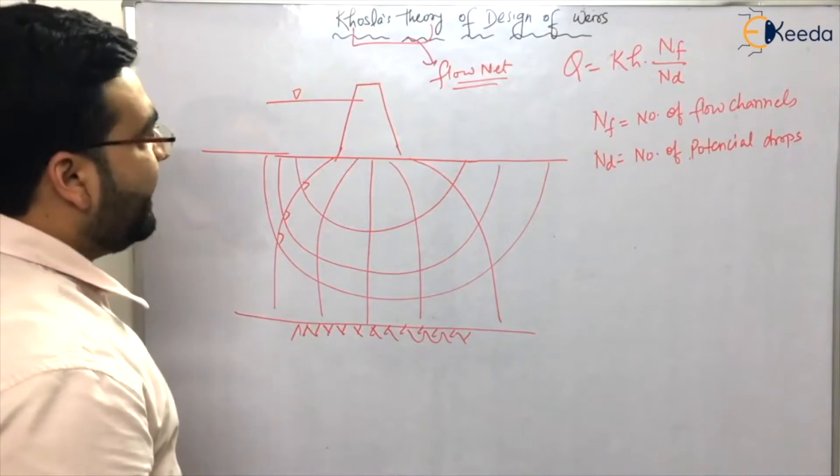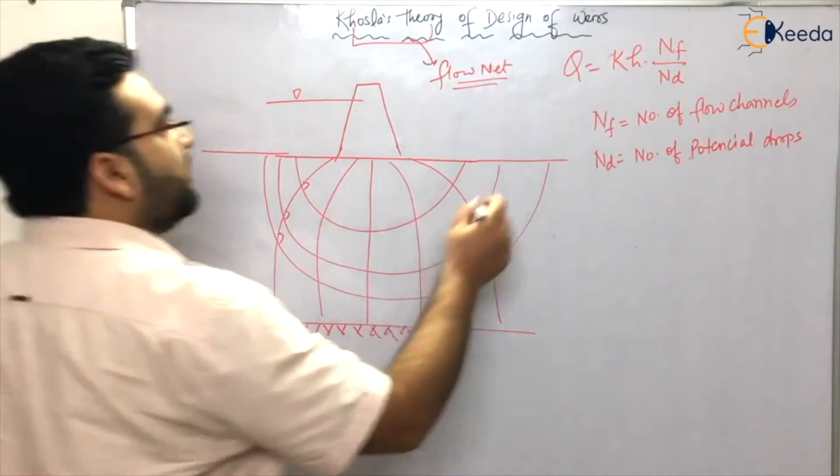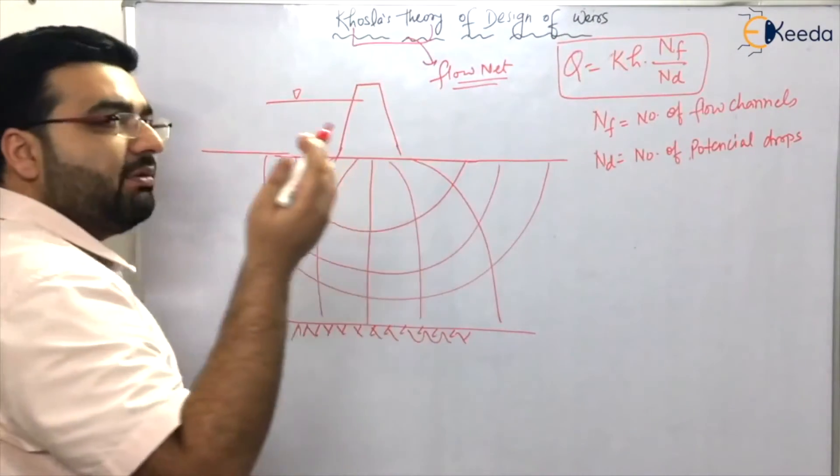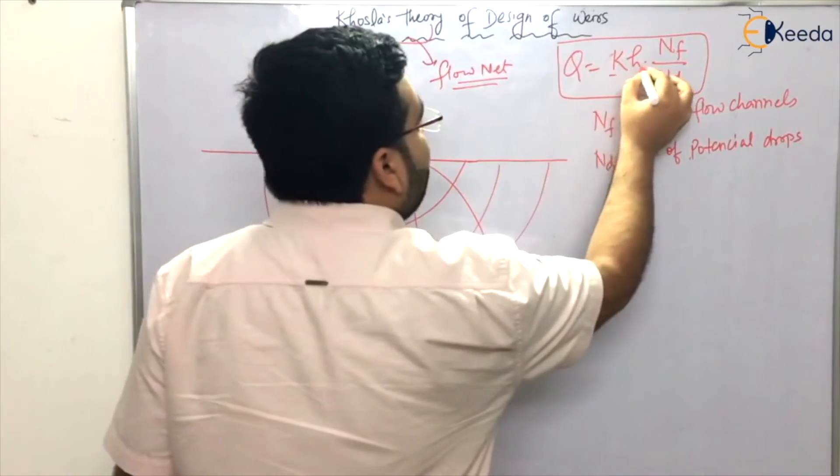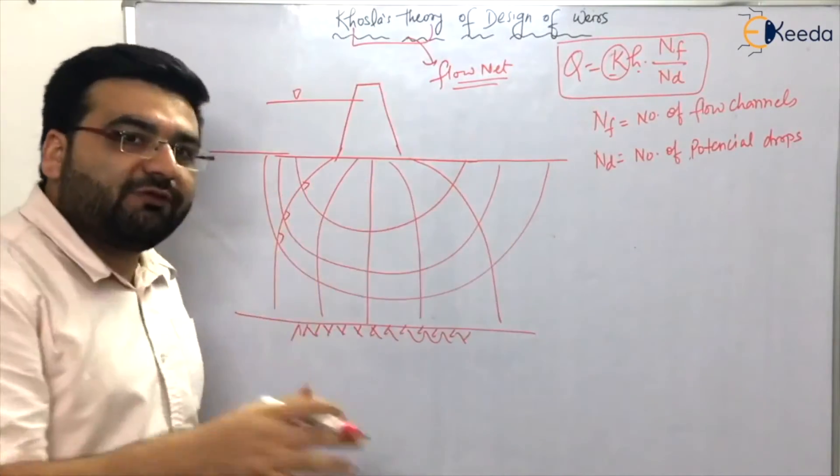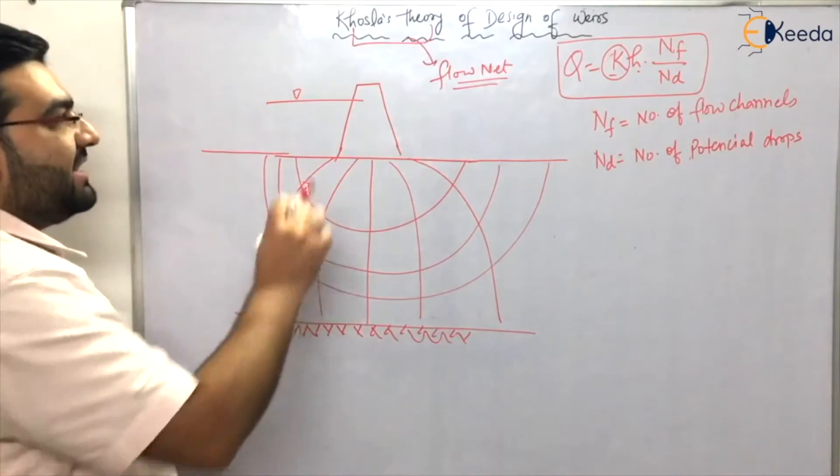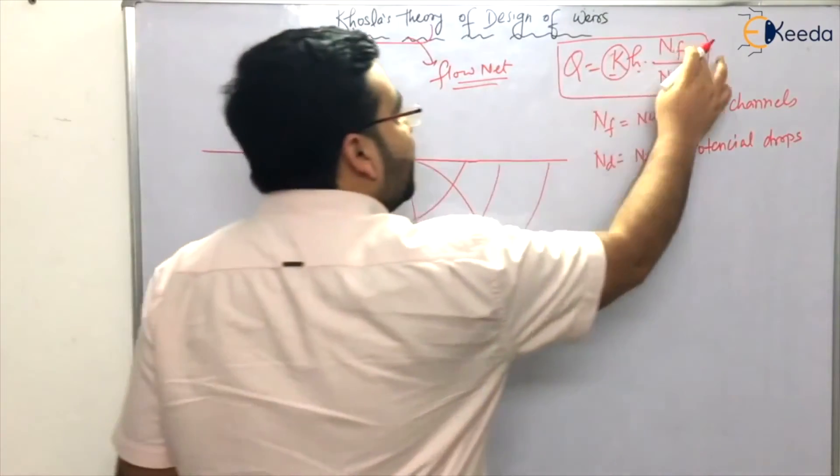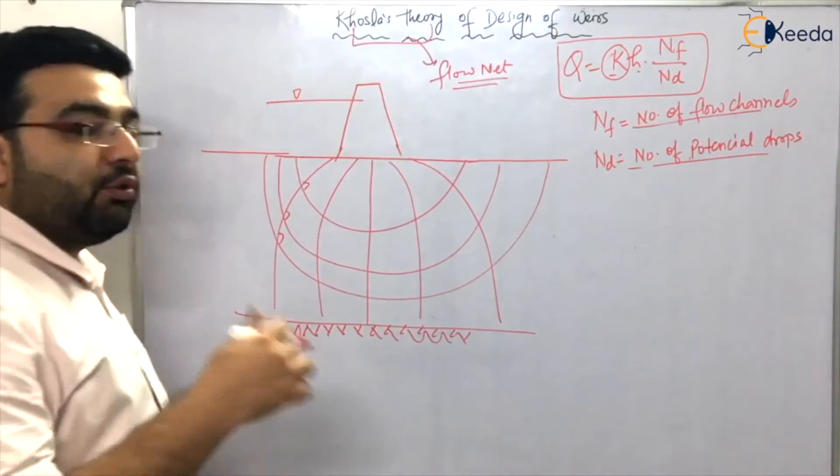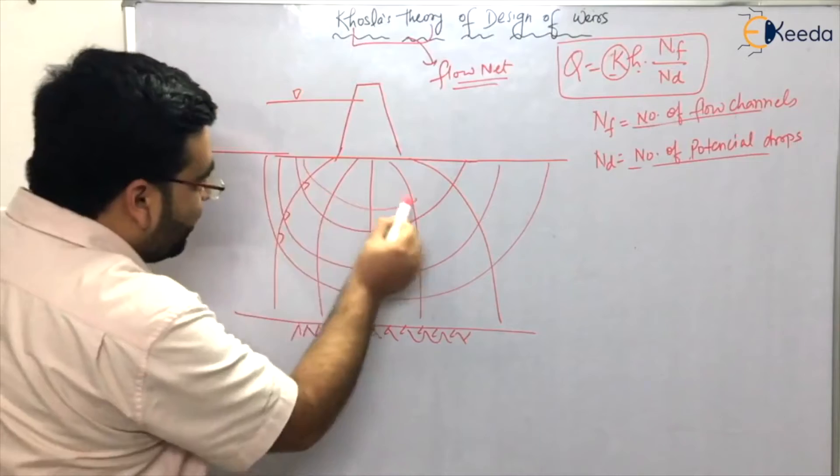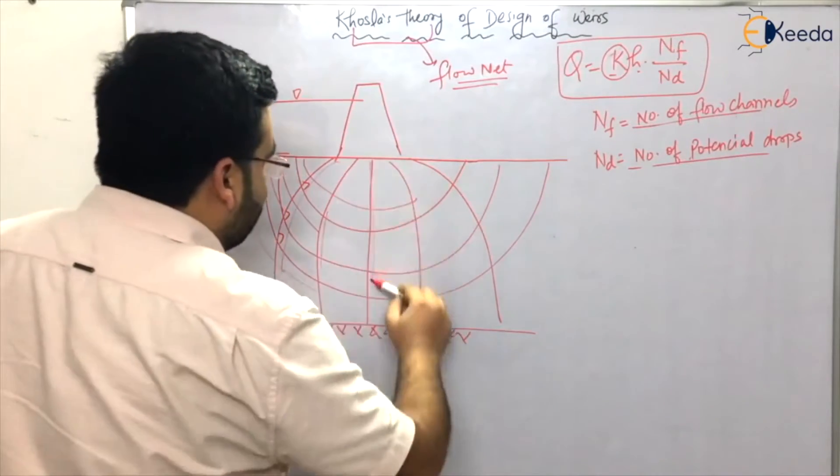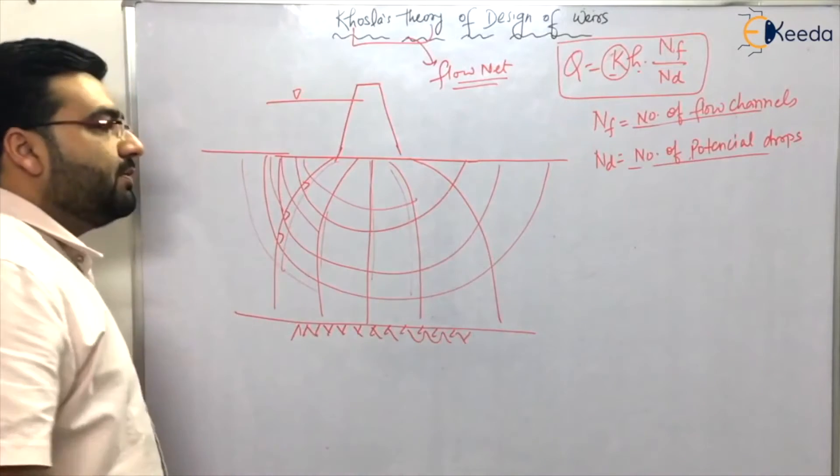You also know that discharge, if you calculate with the help of flow net, is given by k × h × Nf / Nd, where k is the tendency of water to flow, h is the head, Nf is the number of flow channels, and Nd is the number of equipotential drops or potential drops. These are the flow channels: one, two, three, four, and these are the potential drops.